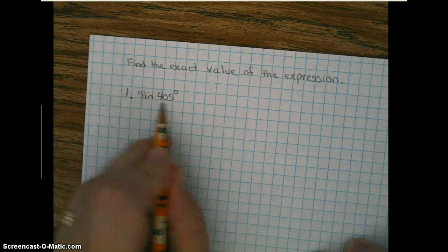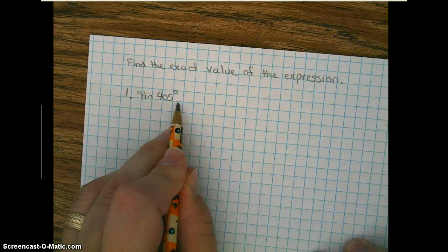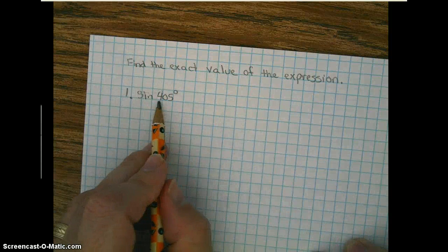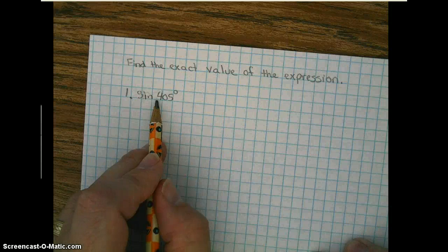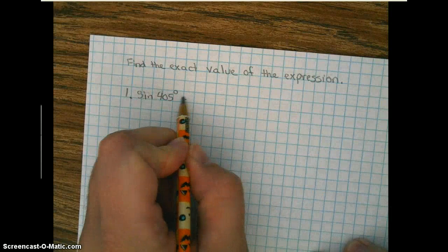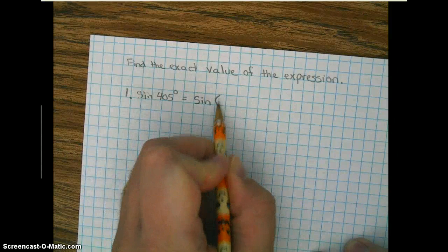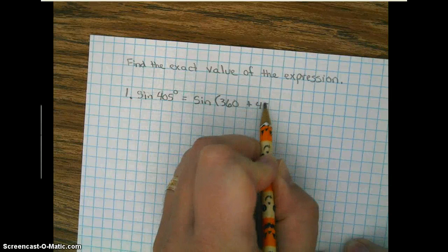Well, first of all, we all know that 405 degrees is more than 360, so the first thing we want to find out is how much more. So we're going to subtract 360 from 405, and we get 45 degrees. So we have the sine of 360 plus another 45 degrees.